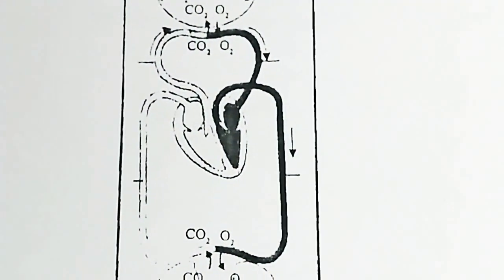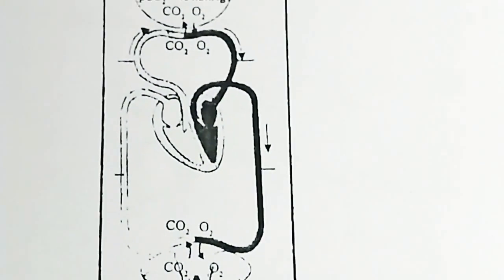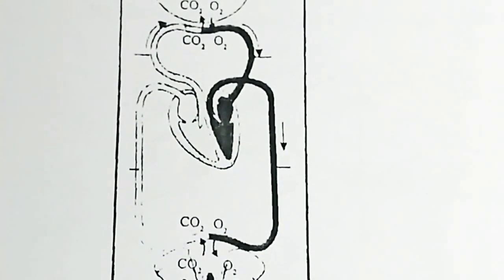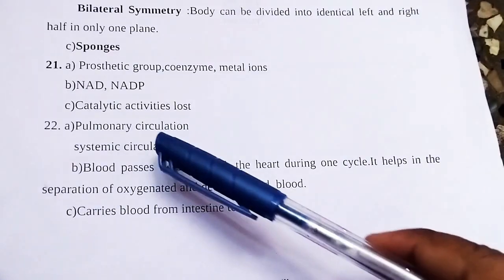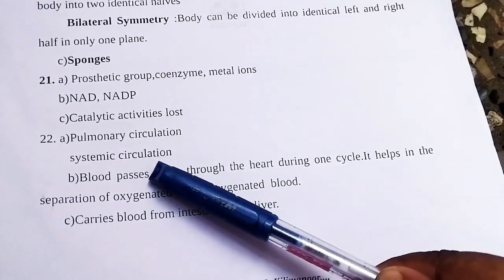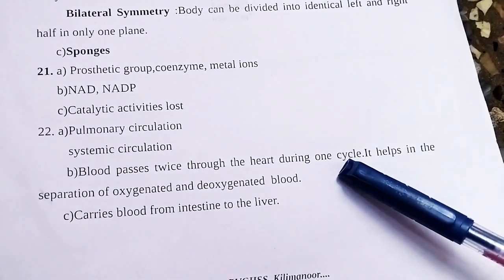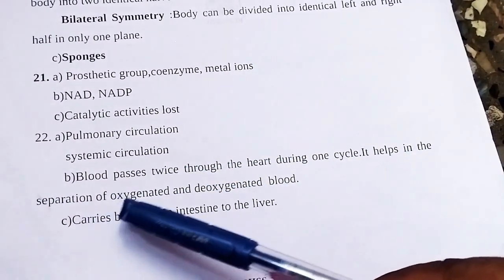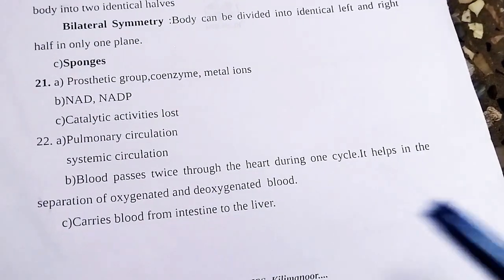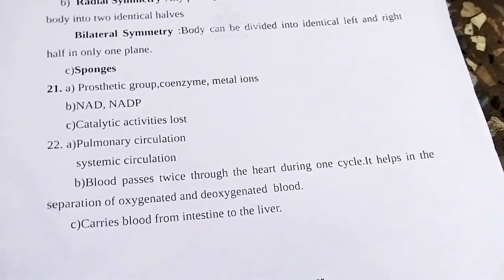The last question: A schematic plan of blood circulation in man is given. Name the two circulatory pathways, explain their significance, and comment on the hepatic portal system. The two pathways are Pulmonary circulation and Systemic circulation. Blood passes twice through the heart during one cycle, helping separate oxygenated and deoxygenated blood. The hepatic portal system carries blood from the intestine to the liver.